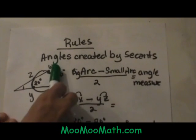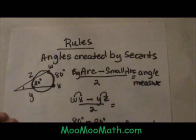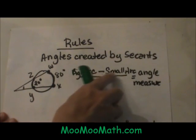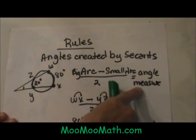But that is how you find that angle. So let us look at the rules. The rules for finding angles created by secants. You take the big arc minus the small arc and divide by two to get the angle measure.